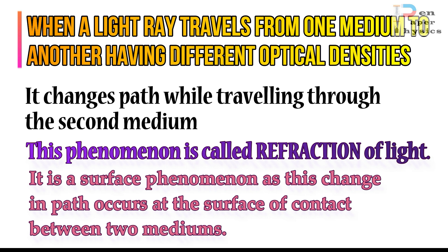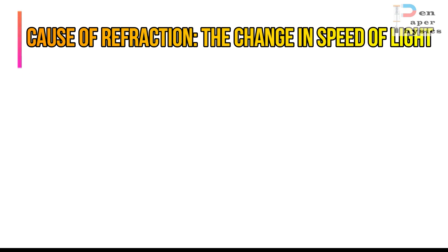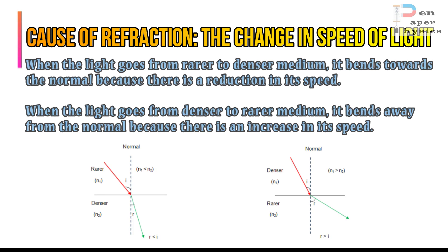Refraction is also called a surface phenomenon, as this change in path of light happens at the surface separating two mediums. The reason behind refraction is the change in speed of light. When a light ray travels from a rarer medium to a denser medium its speed decreases and it bends towards the normal. When it goes from a denser medium to a rarer medium it bends away from the normal as its speed increases.